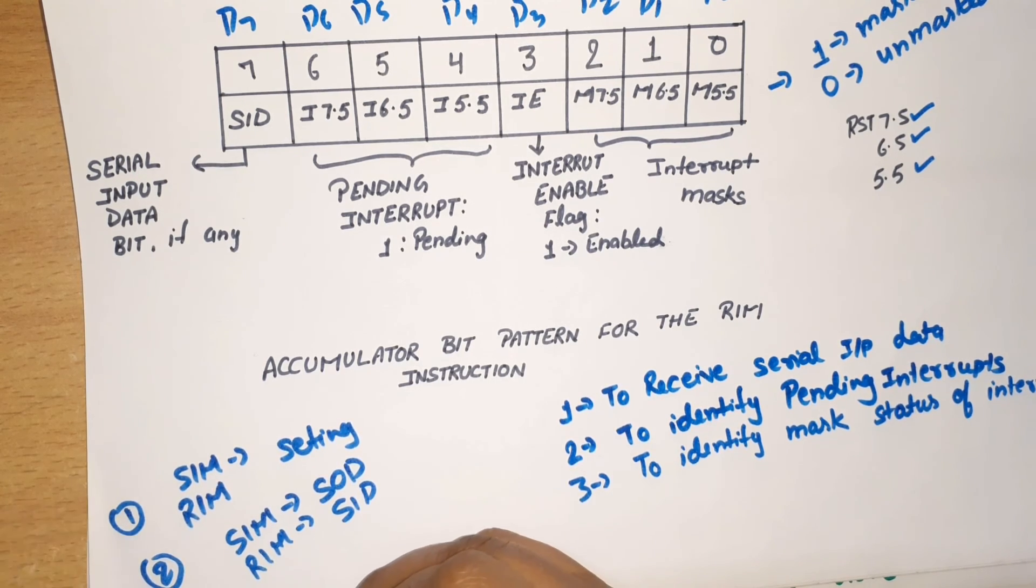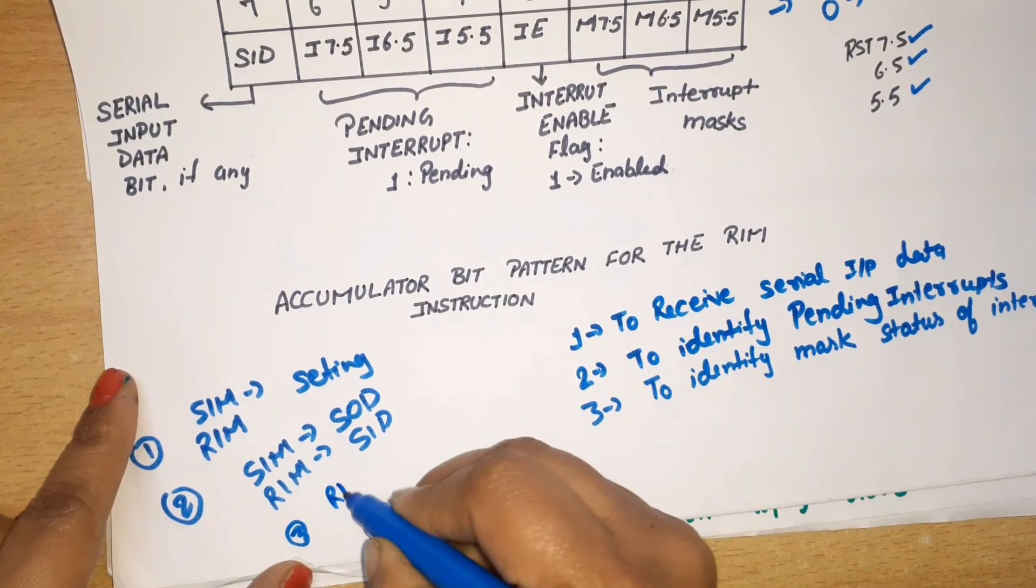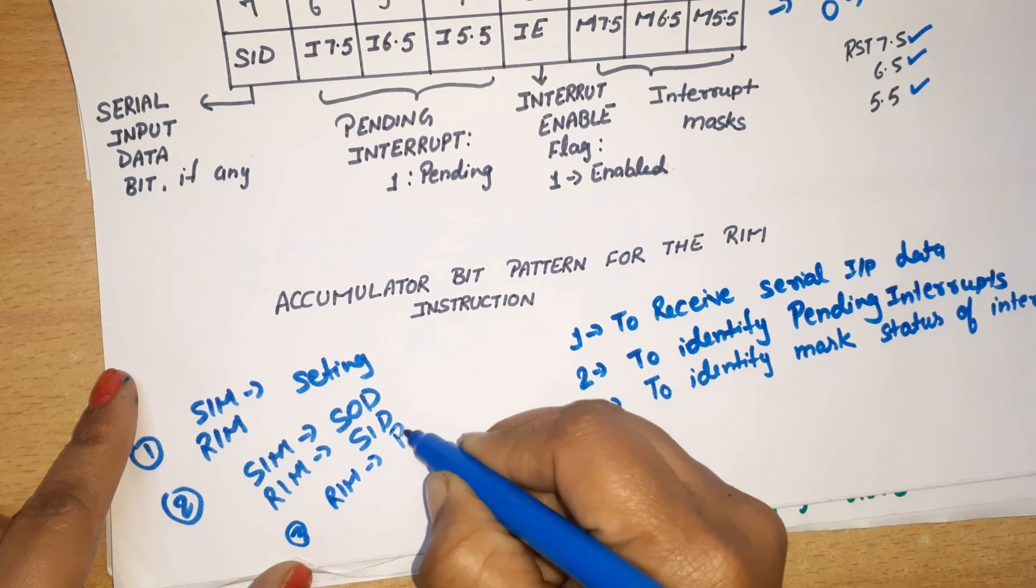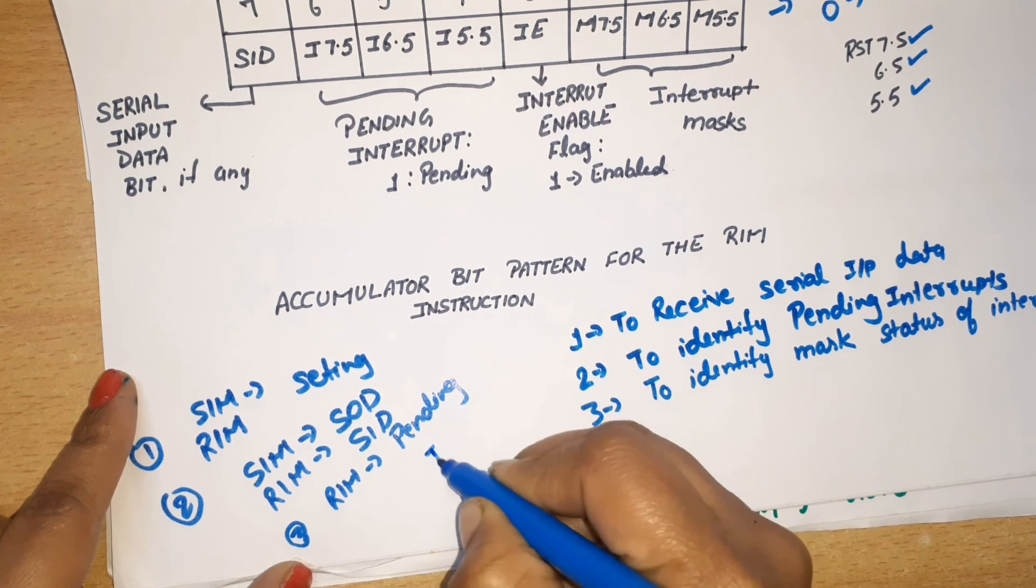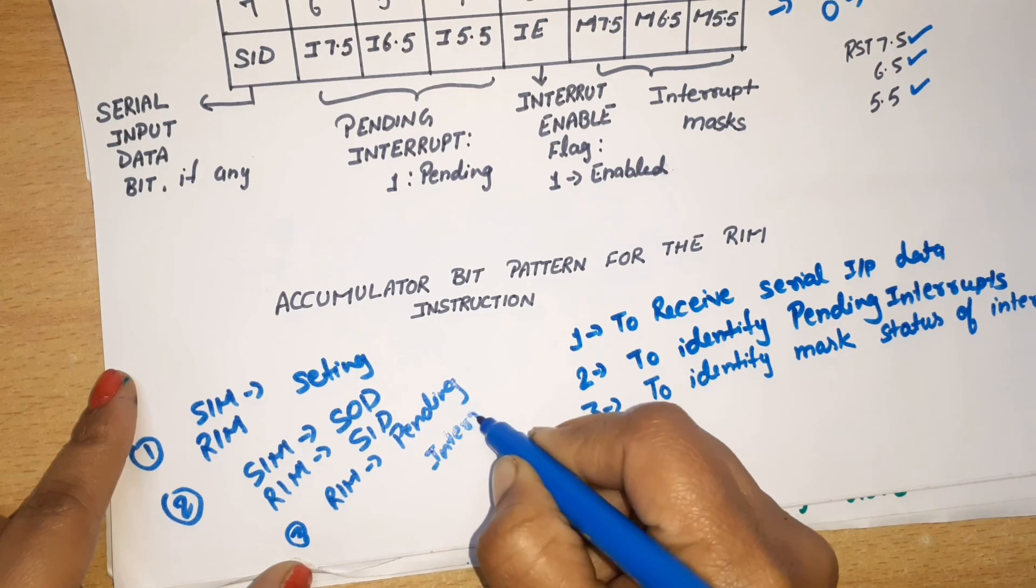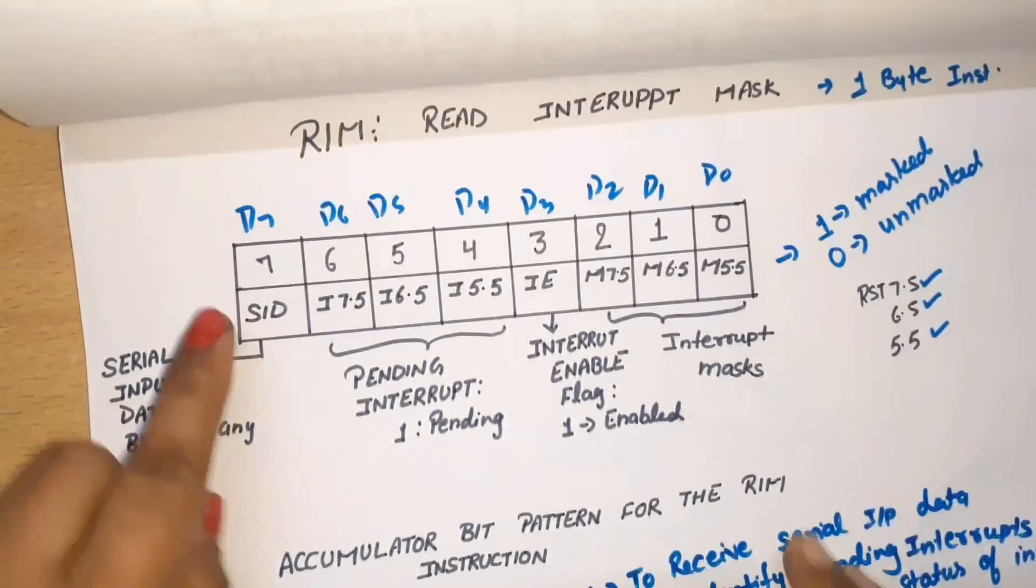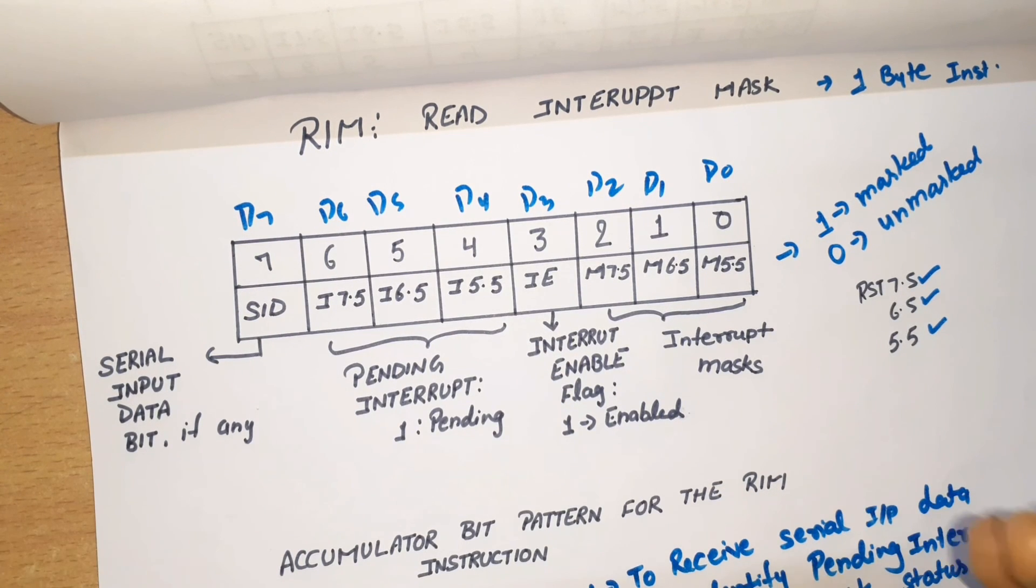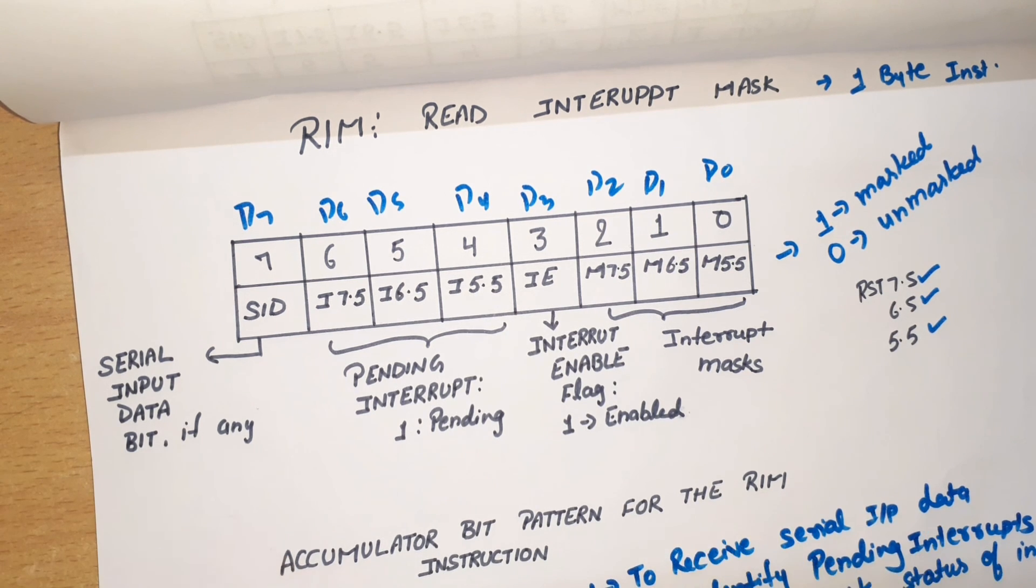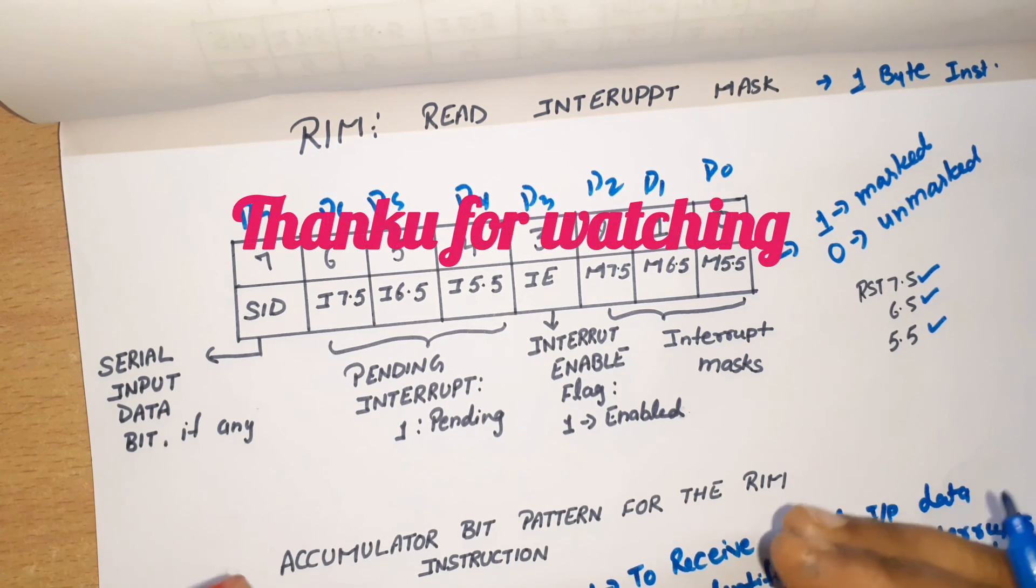Third, in case of RIM, we can find the pending interrupts. Also, in SIM's case, we feed values into the accumulator according to our program and requirements. But in case of RIM, we read the values that are in the accumulator.